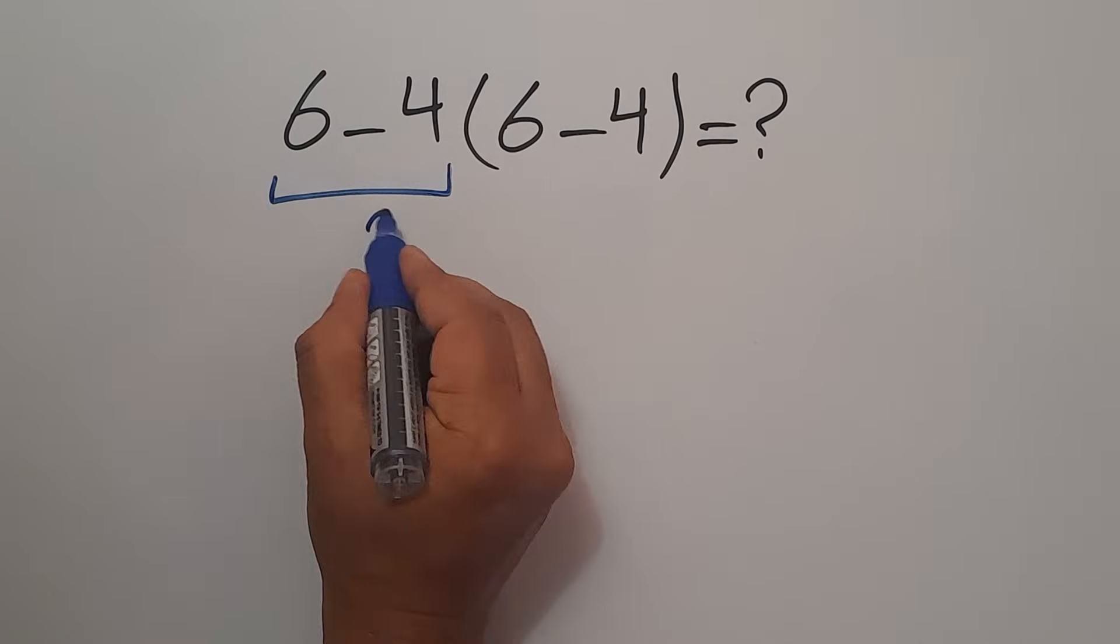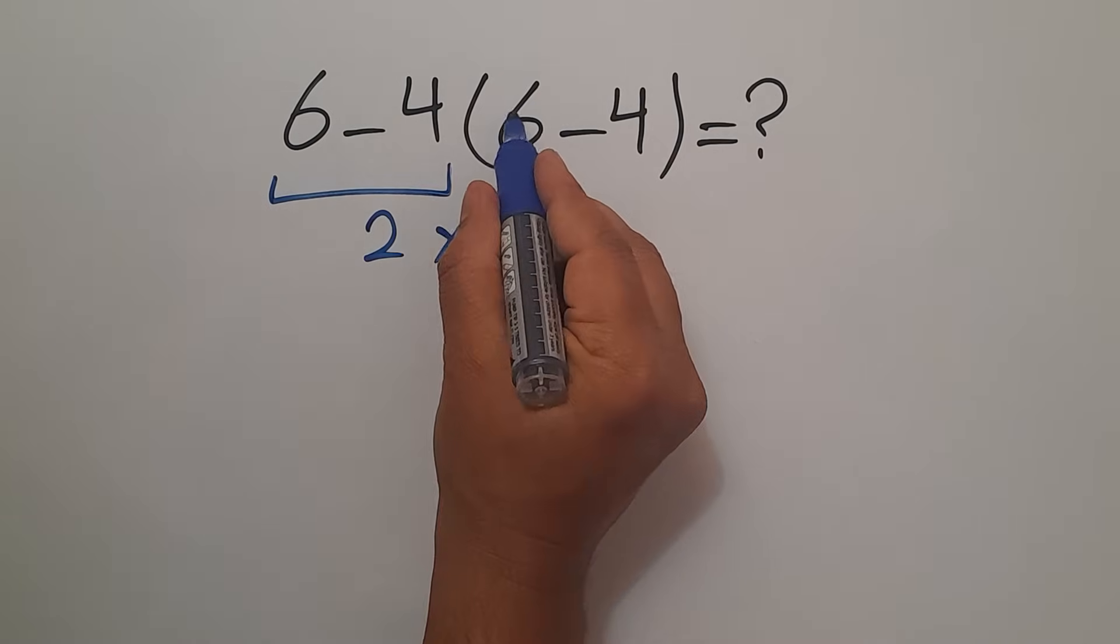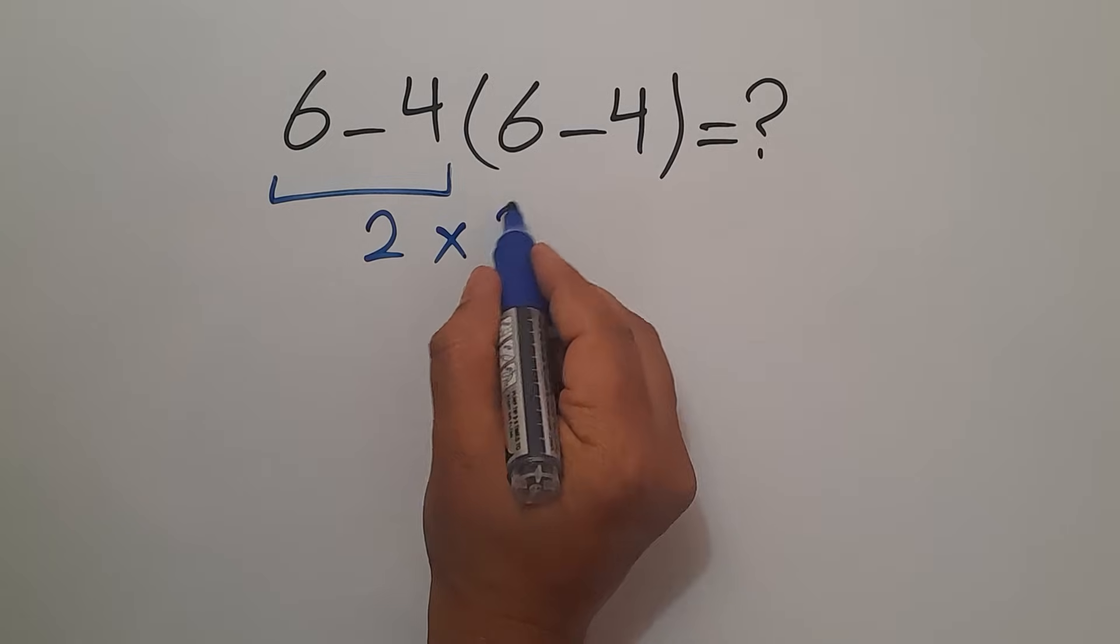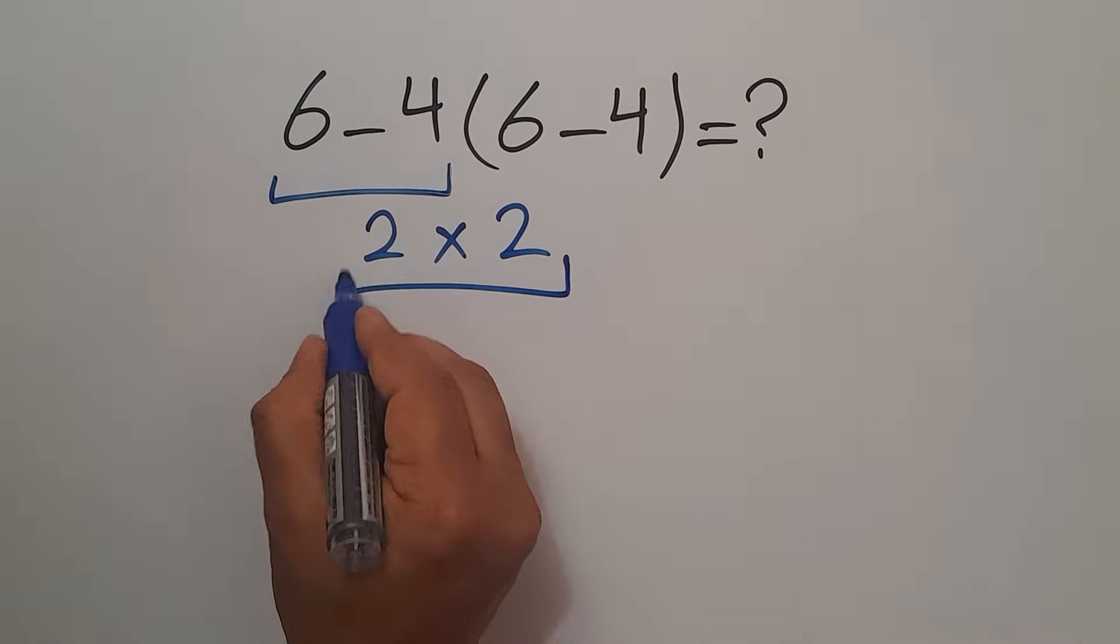6 minus 4 equals 2, and 2 times again we have here 6 minus 4 which equals 2. 2 times 2 gives us 4.